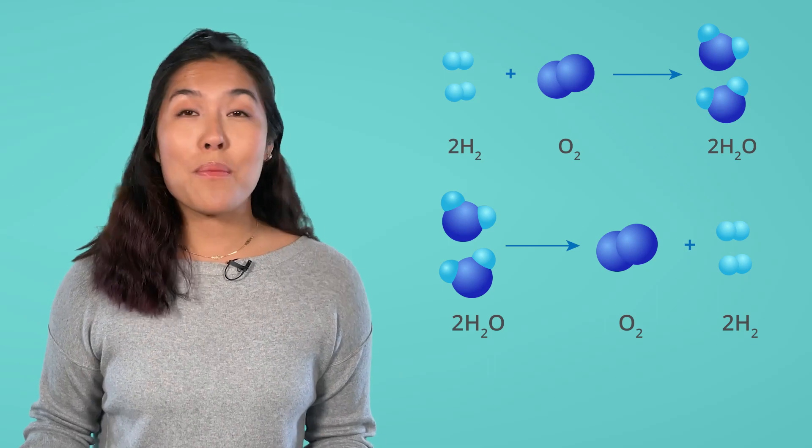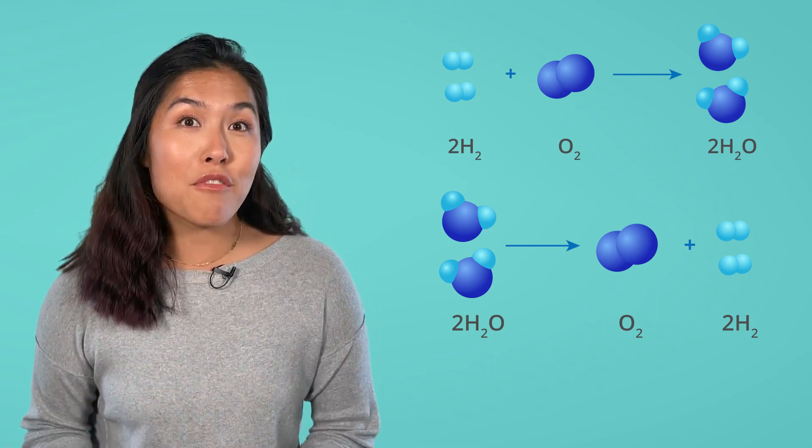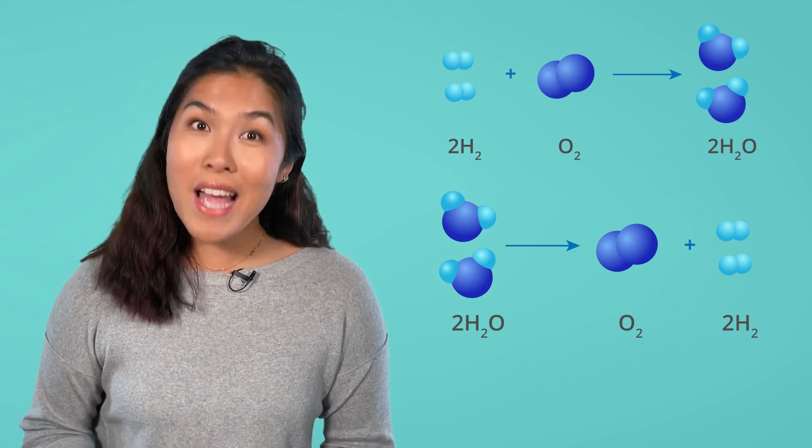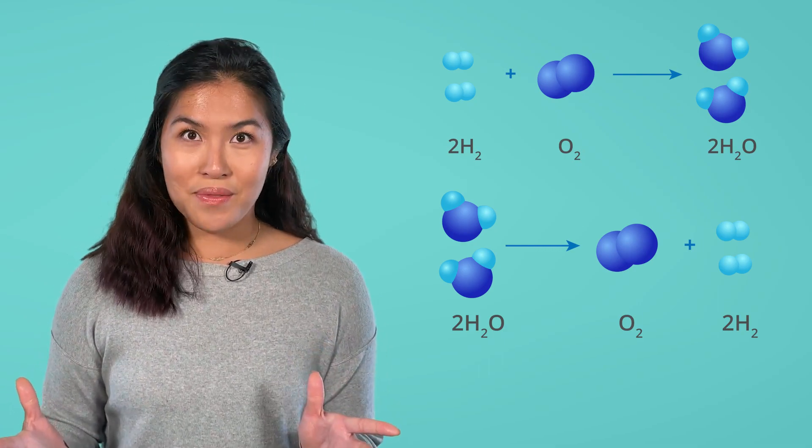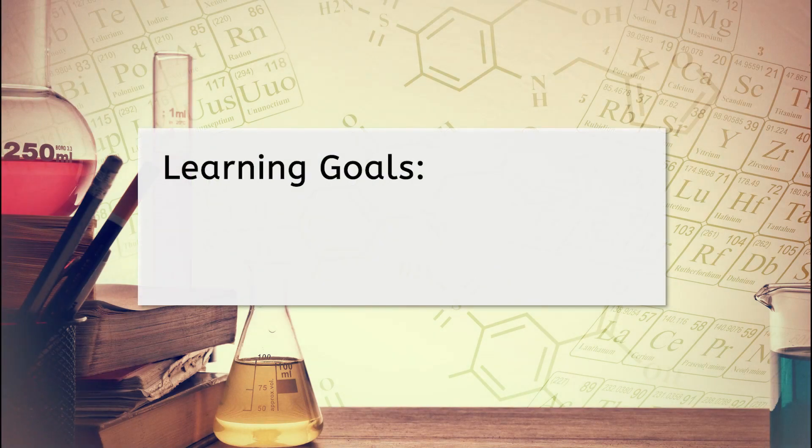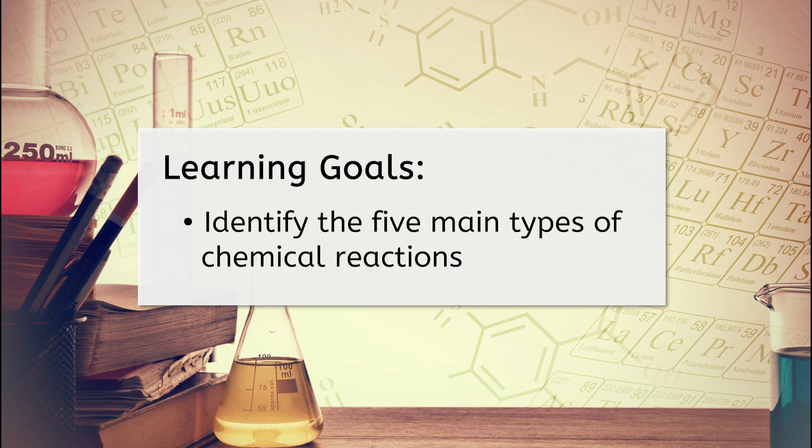These two chemical reactions represent two of the five most common types of chemical reactions: synthesis and decomposition. Before we get started, let's look at our goals for this lesson. By the end, you'll be able to identify the five main types of chemical reactions.